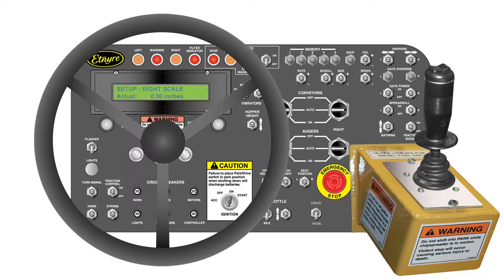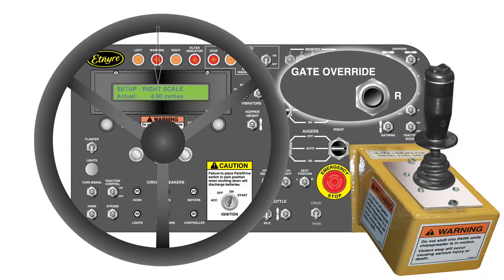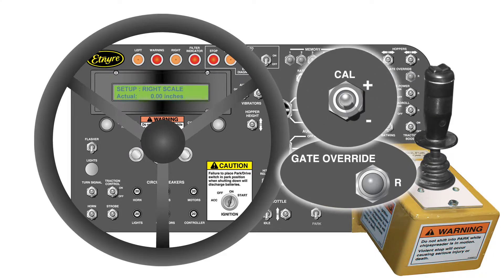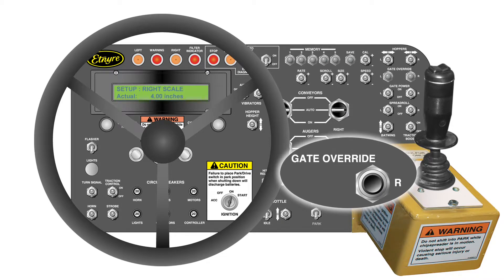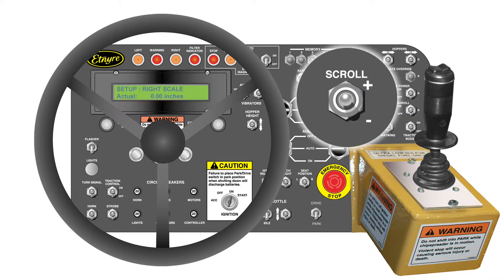This screen is used to set the actual open position of the right gate. The number will read 0 inches until the right gate override is actuated. While holding the right gate override, the number should read 4 inches. If it does not read 4, first visually verify that the gate is actually fully open. After verification, while holding the right gate override, press the cal switch to set the value to 4 inches. When the right gate override is released, the number on the screen should go back to 0. Push the scroll switch down to move to the next screen.